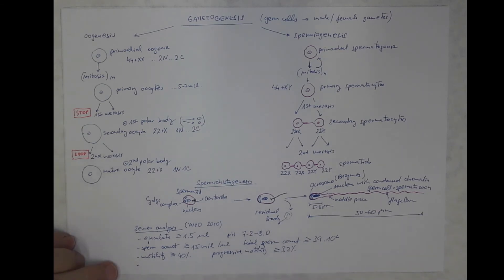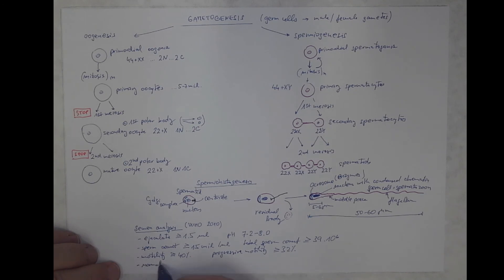Morphologically normal shapes, the numbers should be at least 4%, but the viability should be over 58%. Again, these figures might evolve in the future.